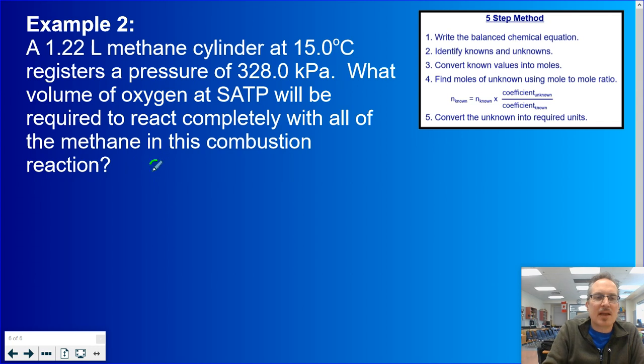So we have methane and we are burning it in oxygen. So when I burn carbon, I make CO2. When I burn hydrogen, I make H2O vapor. Now, we need to balance this. So we have one carbon, one carbon, two oxygen. We already have three oxygen. We don't do oxygen next. We have one carbon, one carbon, four hydrogen. We need four hydrogen. Two oxygen plus two oxygen is four oxygen, four oxygen.